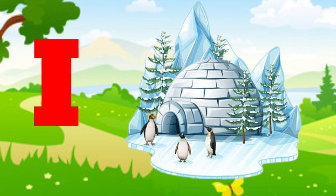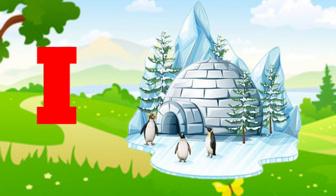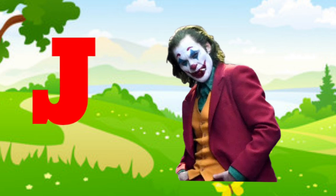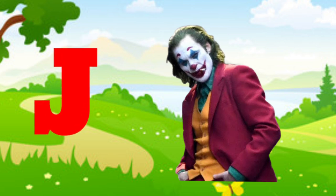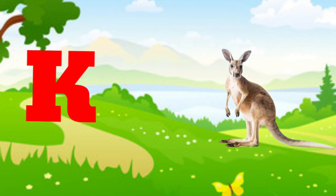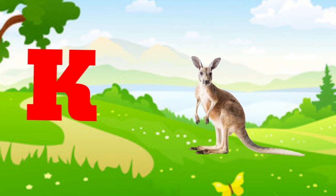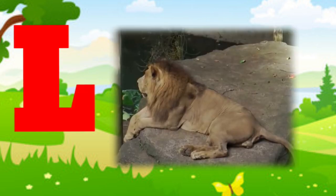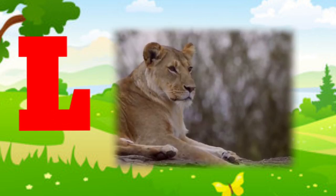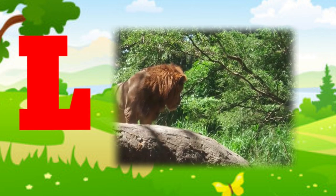I is for igloo, i-i-igloo. J is for jump, j-j-jump. K is for kangaroo, k-k-kangaroo. L is for lion, l-l-lion.